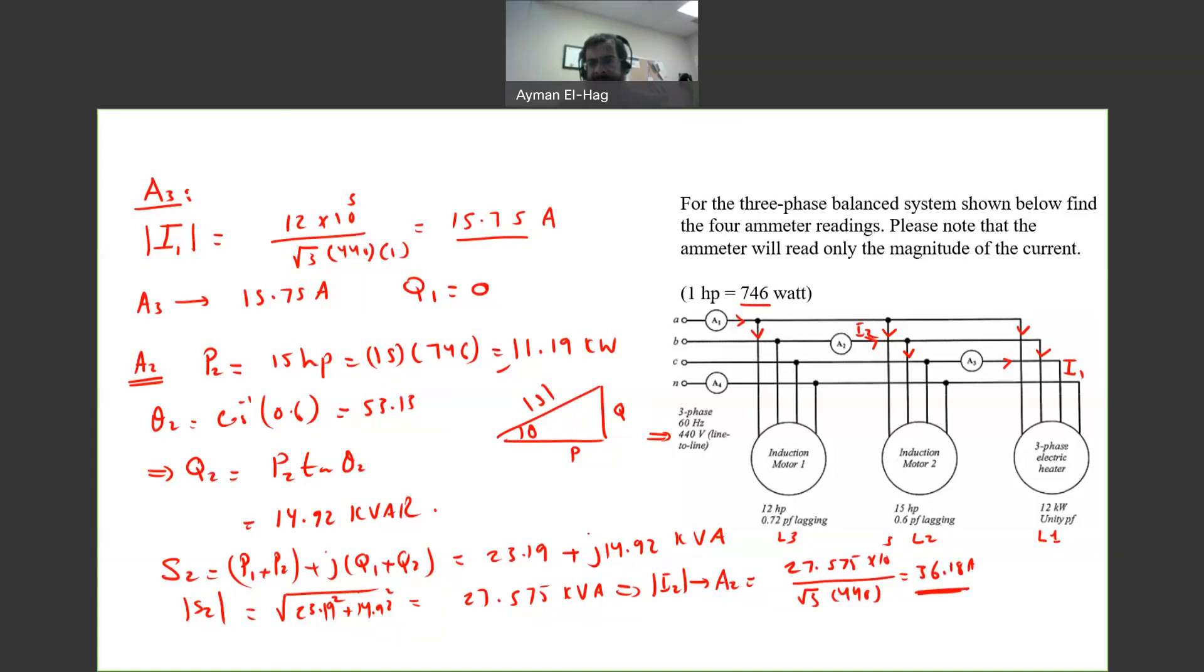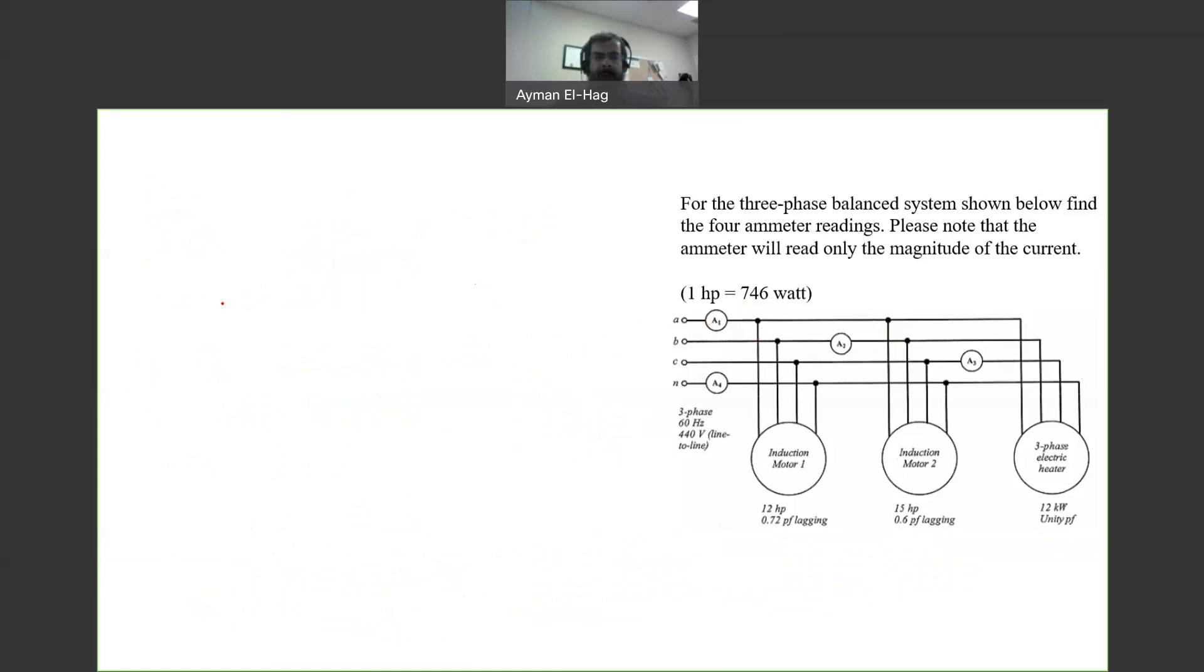So now I found the current at a2. We are left with a1 and a4. Let's go for a1.